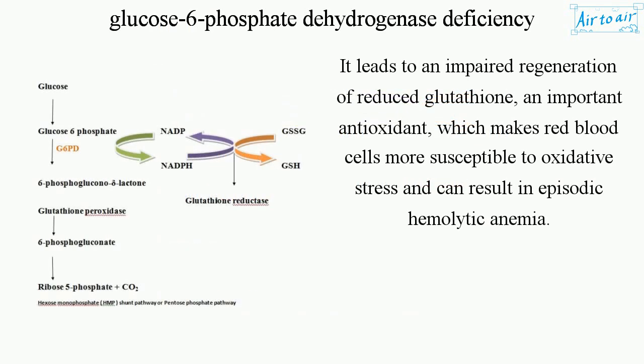It leads to an impaired regeneration of reduced glutathione, an important antioxidant, which makes red blood cells more susceptible to oxidative stress and can result in episodic hemolytic anemia.